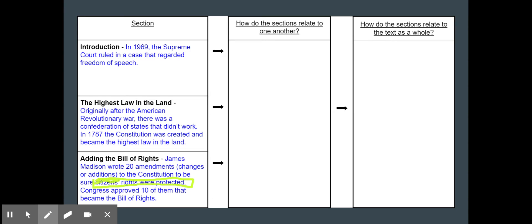They wanted to make sure that citizens rights were protected. They wanted to make sure that it was explicitly stated which rights were protected. So Madison wrote 20 of them and he approved 10 of them that became the Bill of Rights. Of course we have more amendments now but those first 10 are still known as the Bill of Rights. All right so I have gone ahead and found my main ideas of each section.